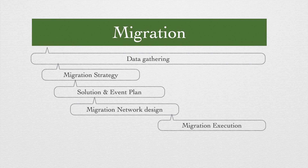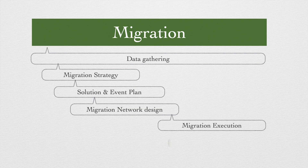We looked at this slide in the last video as well to understand the sequence and stages of different activities in a migration. The discovery of the current environment happens throughout the project lifecycle. You start doing the migration strategy for the overall migration. Network migration design and project plan are done together, hand in hand with the overall migration strategy. Once planning is completed, migration tasks are kick-started, and this is the stage where network cutover is also executed if applicable to the respective migration scope.